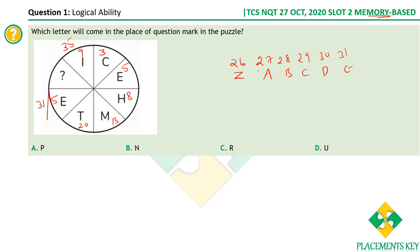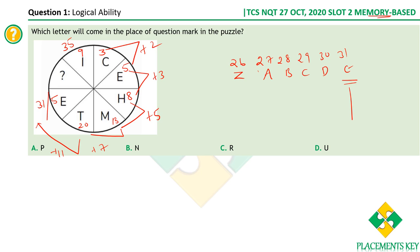Now let's look at the pattern. If you carefully observe, you have plus 2, then plus 3. So 5 plus 3 is 8, 8 plus 5 is 13, 13 plus 7 is 20. Clearly these differences are prime numbers: 2, 3, 5, 7. After 7, the next prime number is 11, so 20 plus 11 is 31. The next prime after 11 is 13, so we add 13.